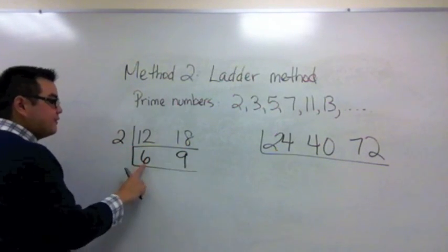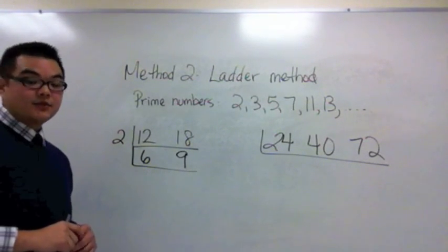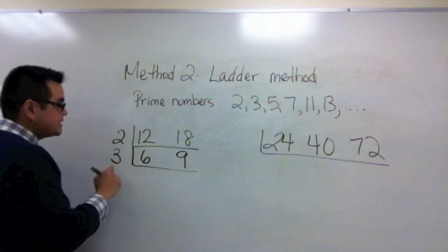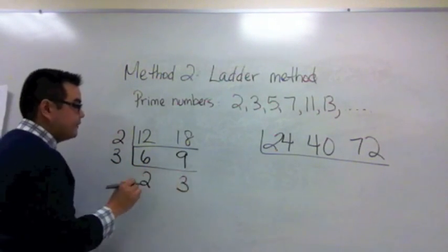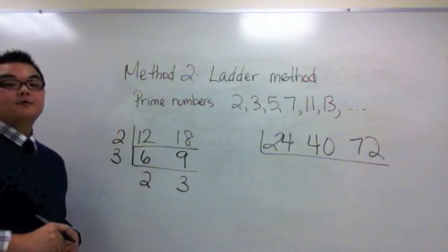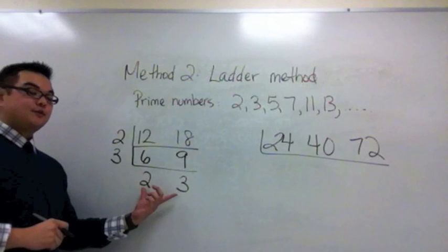We continue the ladder because 6 and 9 there's a prime number that goes into both of them and that is 3. So I put 3 here. 6 divided by 3 is 2. 9 divided by 3 is 3. I know to stop my ladder work right now because there's no prime numbers that go into both 2 and 3.